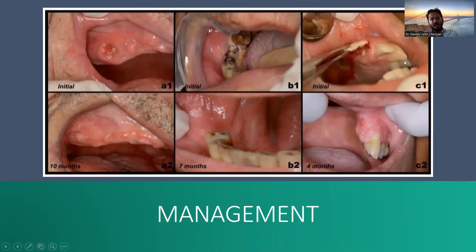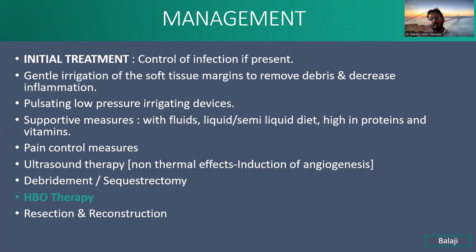Coming to the management of osteoradionecrosis, initial treatment is control of infection if present. You can gently irrigate the soft tissues and remove any debris. Decrease inflammation using pulsating low-pressure irrigation devices. Supporting measures include fluids, a semi-liquid diet, a diet high in proteins, and vitamins. Pain control measures can be used. Ultrasound therapy can also induce angiogenesis. Debride the tissues and perform sequestrectomy.